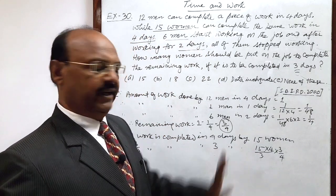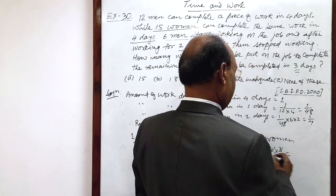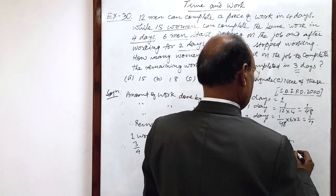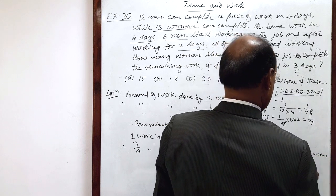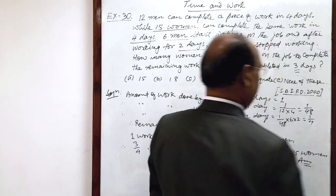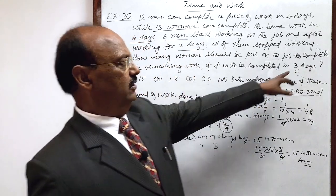Let us simplify it. We will get the answer. Here 3 is cancelled out, 4 is cancelled out. The number of women required is 15. 15 women are required to complete this job in 3 days.